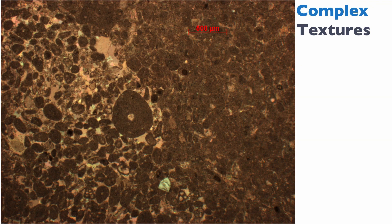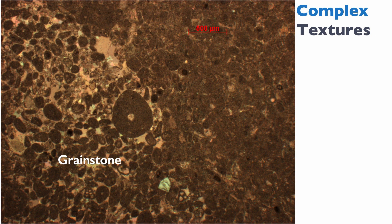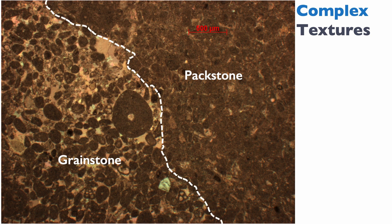Here's an example of a more complex texture, because one thing to know is that you can have multiple textures in the same thin section. In this example, on the left we have a grainstone with cement in between the different grains, but on the right we probably have a packstone, because you can see grains but there's still mycrite. Those textures can be complex, and often a rock will be named with two textural names — for instance, a grainstone-packstone or a packstone-grainstone. You put the first name as the most abundant of the two textures, and the limit between them is indicated by a white dashed line.